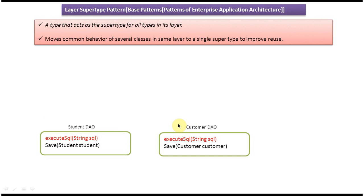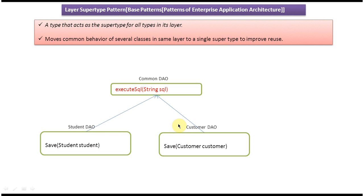Since executeXQL is duplicated in two places, we can remove it from both StudentDAO and CustomerDAO, and move it into a super class. We define CommonDAO as that super class with the executeXQL method. StudentDAO and CustomerDAO will extend CommonDAO, so executeXQL will be available to both.